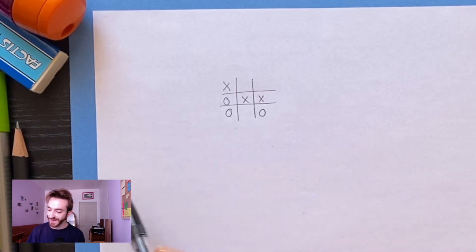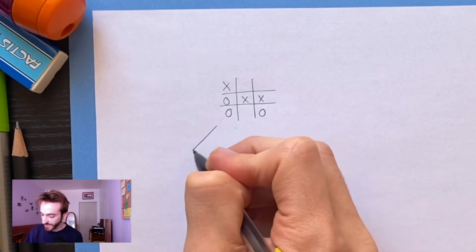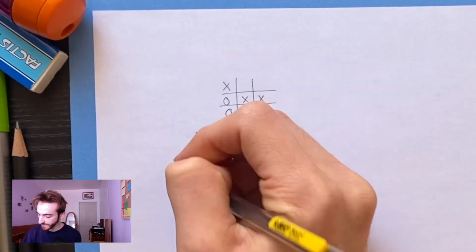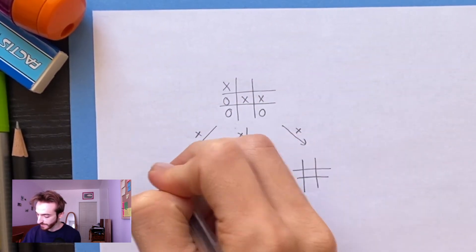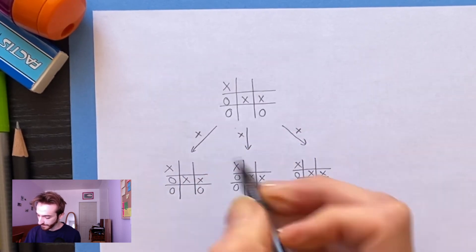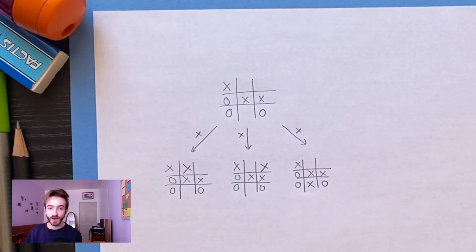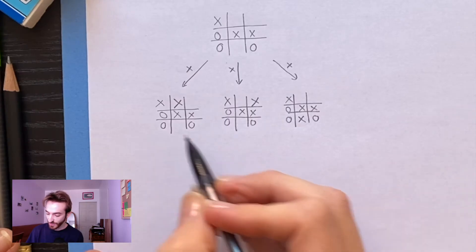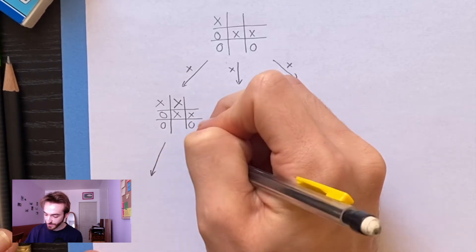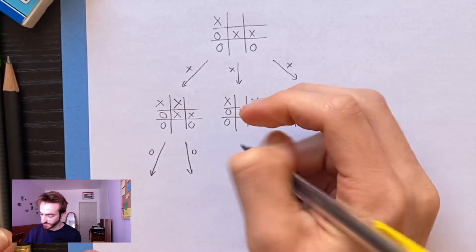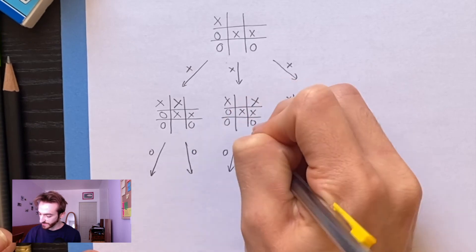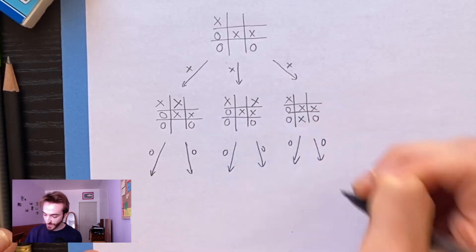So instead what they do is they just think about every possible way the game could go. So it's X's turn, there are three possible moves for X. X can go here, here, or here. And then what the computer does is it keeps building this tree out. So now it'll be O's turn, and O has two possible moves here, and two possible moves here, and two possible moves here. Let's just write them all out.